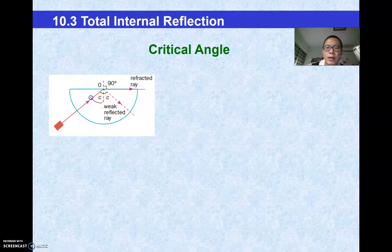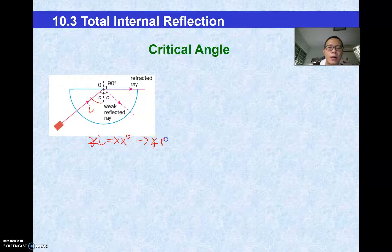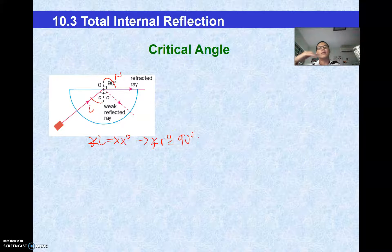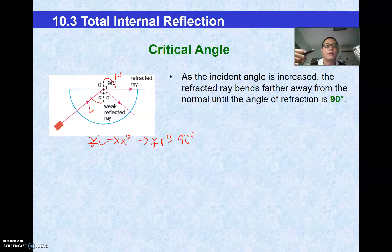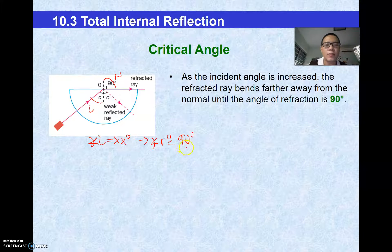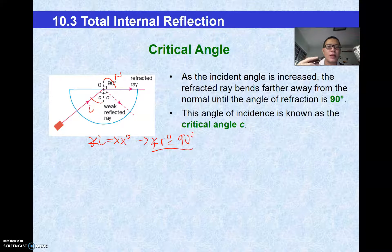There will be a case whereby at a certain angle I — at a certain degree — I will actually have a refracted angle that is 90 degrees. At 90 degrees, I do not need a tool to measure it — like right angles, I can see it straight away. At this phenomenon, I actually term my angle I and give it a name. I call it the critical angle.